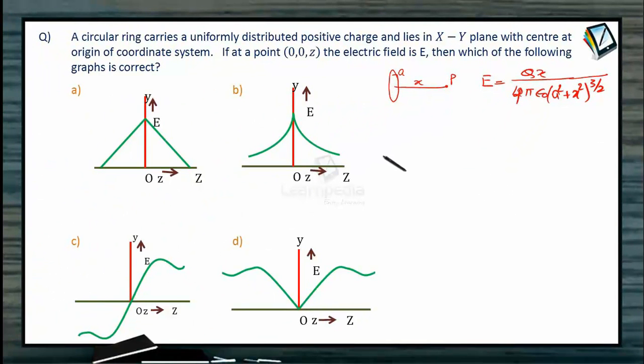In this electric field, the variable part is this portion only: x divided by (a² + x²)^(3/2). This is the variable portion, rest of the things are constant. So we have to see the variation of this. At x equal to 0, y is 0, it is quite evident.